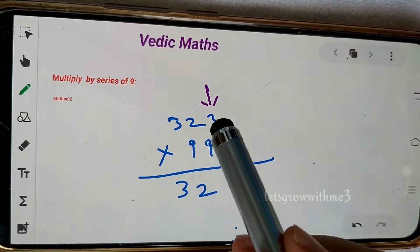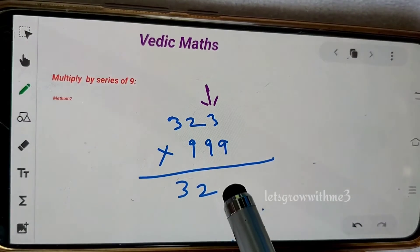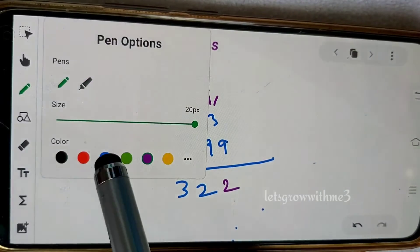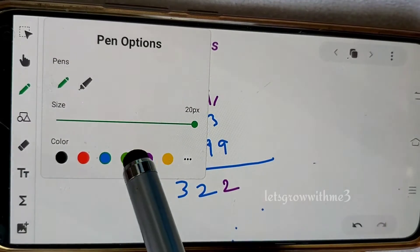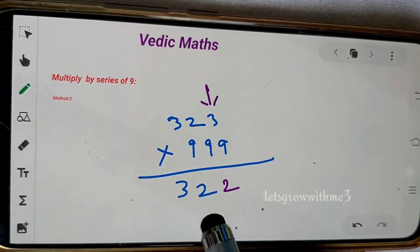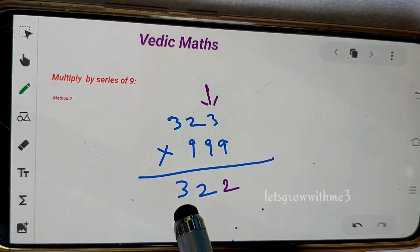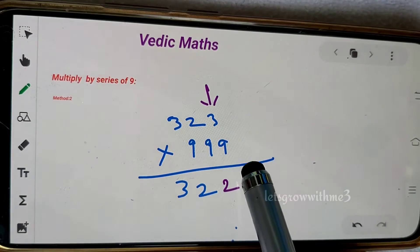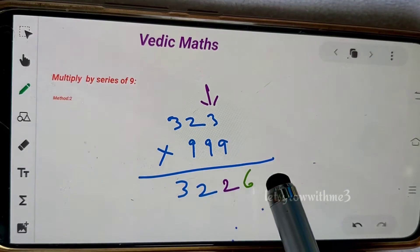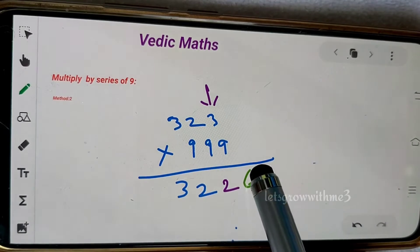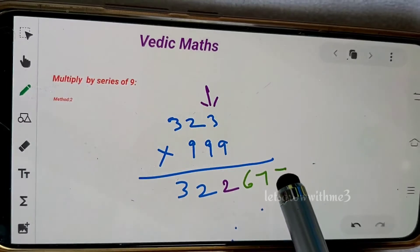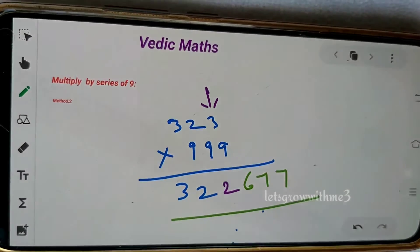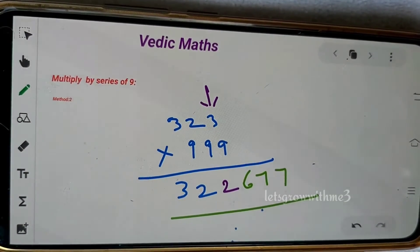I'll change the pen so you will understand clearly. 323 minus 1 is 322. After writing this number, we need to find out the 9's complement of this number, or I can say r minus 1's complement. Whenever I add this number and this number, you should get 9. 3 plus 6 is 9, 2 plus 7 is 9, again 2 plus 7. That's our answer, it's that simple. The answer is 322,677.